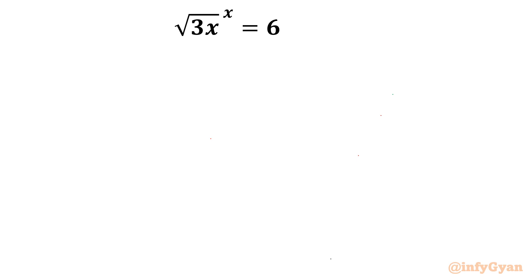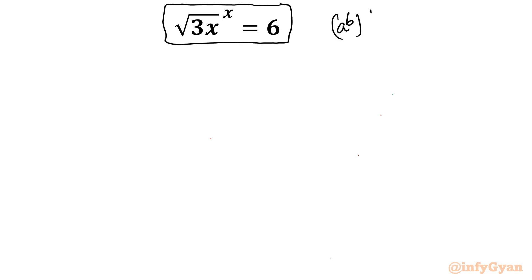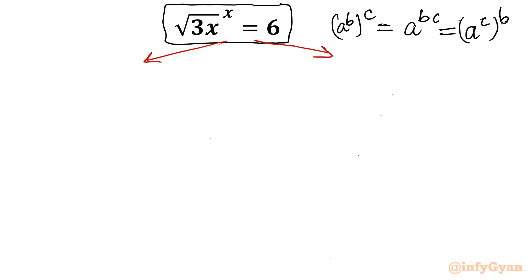Now let us take the second problem — it is an exponential problem. The most important property to note is: a to the power b, whole to the power c, equals a to the power b times c. I will demonstrate the solution using three methods — with substitution, without substitution, and using logarithms. For Method 1, let us substitute 3x equals a, so x equals a by 3.